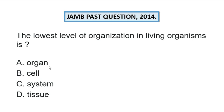The third level is the organ — aggregation of tissues forms the organ. Examples of organs you already know: stomach, spleen, intestine, pancreas. You can list as many as possible in the comment section.